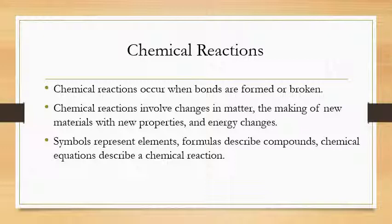What are chemical reactions? Chemical reactions occur when bonds are formed or broken. They involve changes in matter — you can have a physical change or a change in state, or chemical changes where you're making new compounds with new properties, and also energy changes where energy is either released or absorbed. Symbols represent elements, formulas represent compounds, and chemical equations describe what's happening in the reaction.